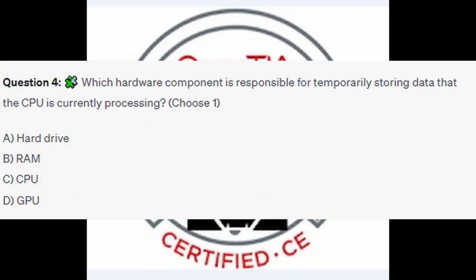Question number 4: which hardware component is responsible for temporarily storing data that the CPU is currently processing? Choose one. Is it A, hard drive? Is it B, RAM? Is it C, CPU? Or is it D, GPU?